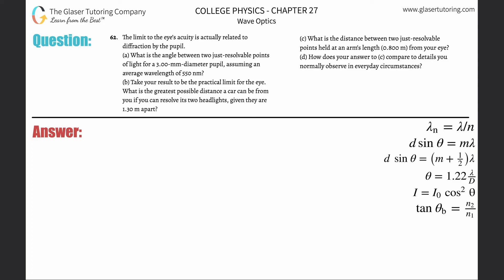Number 62. The limit to the eye's acuity is actually related to diffraction by the pupil, letter A. What is the angle between two just resolvable points of light for a 3mm diameter pupil, assuming an average wavelength of 550nm?